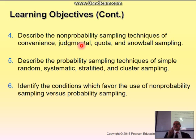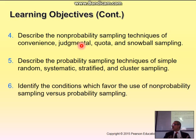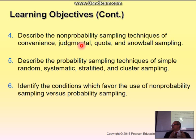Judgmental sampling is when you make a judgment — this person yes, this person no. Quota sampling means you set a quota. For example, if you know that half of telecommunications users are male and half are female, you decide your sample will be 50% male and 50% female. You might also look at education level — highly educated, middle, and low — and ensure your sample reflects those same proportions.